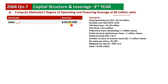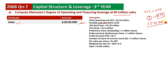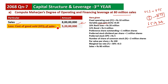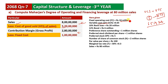The sales figure is 80 million. We have variable cost. Variable cost is 0.65 times 80 million, which equals 52 million. So contribution margin is 80 million minus 52 million, which is 28 million. Fixed cost is 10 million. The contribution margin minus fixed cost gives us EBIT.